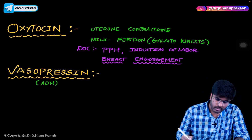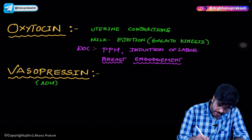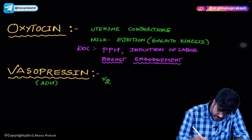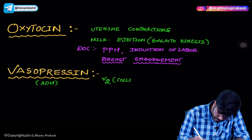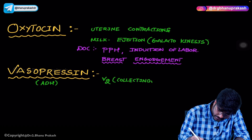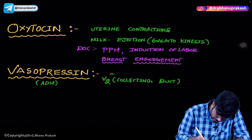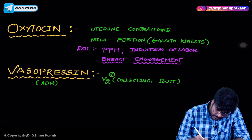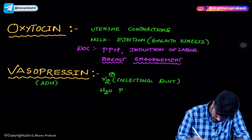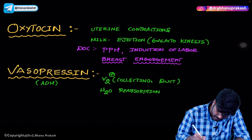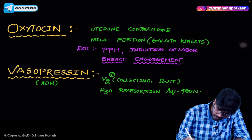Now let's talk about vasopressin, which is anti-diuretic hormone. Vasopressin acts on V2 receptors on the nephrons. These V2 receptors are present in the collecting ducts — the last parts of the nephron. Whenever V2 receptors are activated, water reabsorption occurs with the help of aquaporin-2 channels.